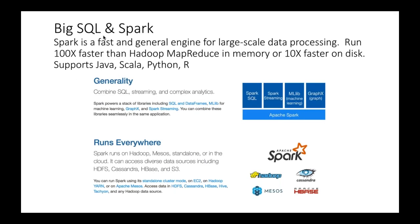BigSQL and Spark: Spark is a fast and general engine for large-scale data processing, very heavy on the analytics side. Many companies are investing big time in Spark for gaining analytics out of data. Why do we need Spark? It's 100 times faster than Hadoop MapReduce in memory, and 10 times faster on disk — that is proven. It supports different languages like Java, Scala, Python, and R, and combines SQL, streaming, and complex analytics. It has machine learning, graph views, and streaming components, and you could run it on Hadoop, standalone, or on cloud.